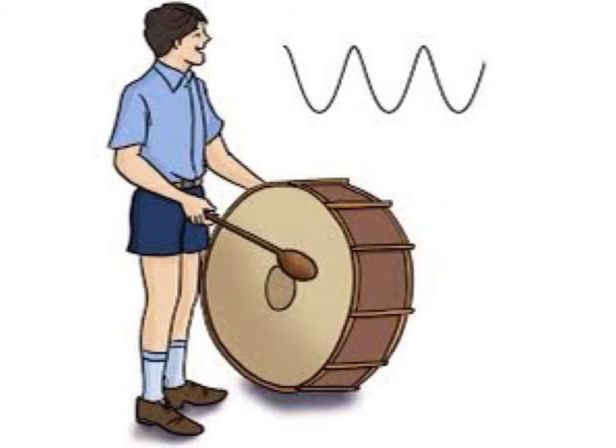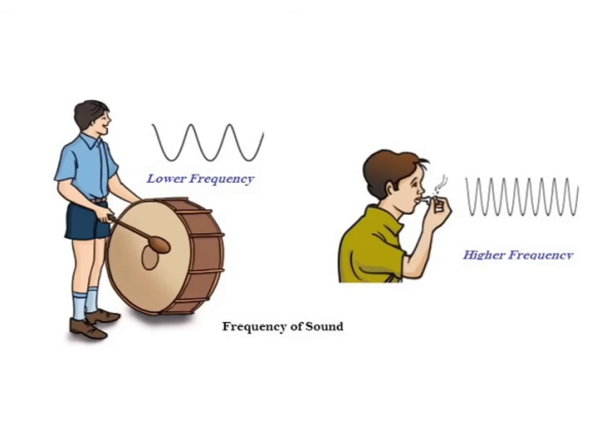Let's take another example. The membrane of a drum vibrates with a low frequency. Therefore, a drum produces a low pitched sound. On the other hand, the air in a whistle vibrates with high frequency due to which the whistle produces a sound having a higher pitch than that of a drum.